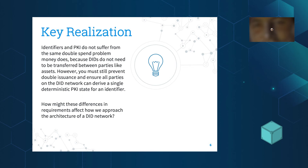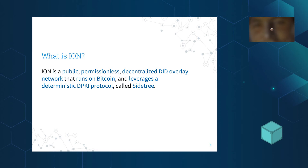Technical overview: ION is a public permissionless overlay network that runs on top of Bitcoin and leverages a DPKI protocol called Sidetree. Sidetree is blockchain agnostic — you can implement it on other things. There's one implemented on Ethereum called Elements, and one on Hyperledger Fabric called TrustBlock by SecureKey. It can only ever be as decentralized as the ledger you implement it on. ION doesn't have any special protocol tokens, validators, or signatories. Microsoft has no control other than the fact that we contribute lots of code to it.